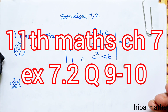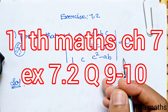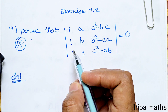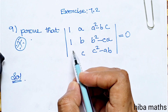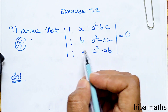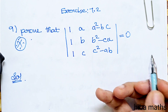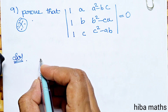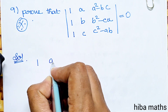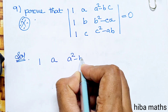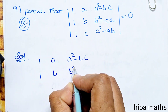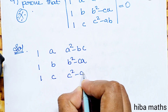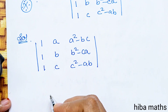Hello students, welcome to Hibamaks 11 Standard Max Chapter 7, Matrices and Determinants. Question 7.29: prove that the determinant with rows 1, a, a²-bc; 1, b, b²-ac; 1, c, c²-ab is equal to 0. In the solution, we will show the matrix 1, a, a²-bc; 1, b, b²-ca; 1, c, c²-ab.